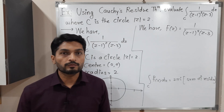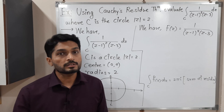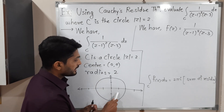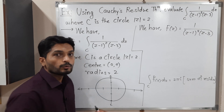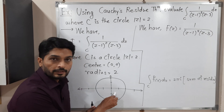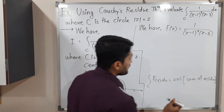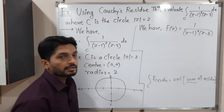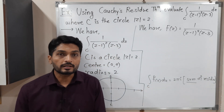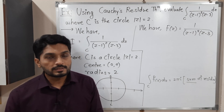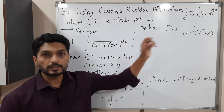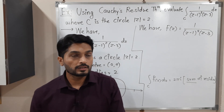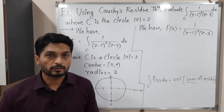We find the singular points of the given function — singular points are where the function is not analytic, or generally where the denominator is 0. We check whether those points lie inside or outside the circle. If a point lies outside, no need to calculate residue. If it lies inside, we find the residue for all such singular points, take their sum, multiply by 2πi, and get the value of the integration.